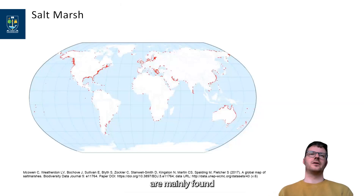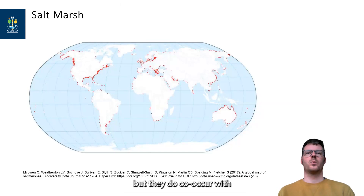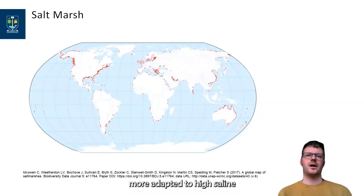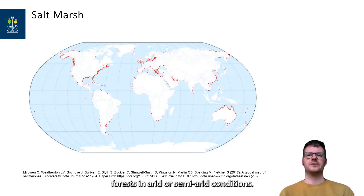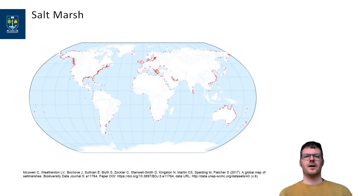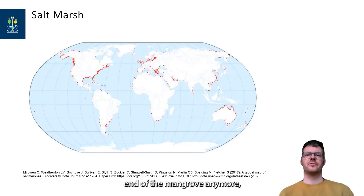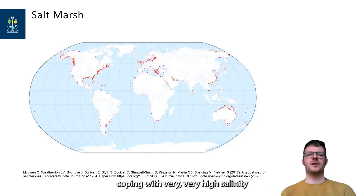Salt marshes, as I've mentioned, are mainly found in the temperate regions, but they do co-occur with mangrove wetlands. Salt marsh plants are often more adapted to high saline or hyper-saline conditions. You will find some salt marsh plants behind the mangrove forest in arid or semi-arid conditions. Here in Australia, for example, where it's very dry, when the tide can't reach the end of the mangrove anymore, that's where you will see salt marshes coming in, coping with very high salinities because of the lack of rainfall and the supply of salt water.